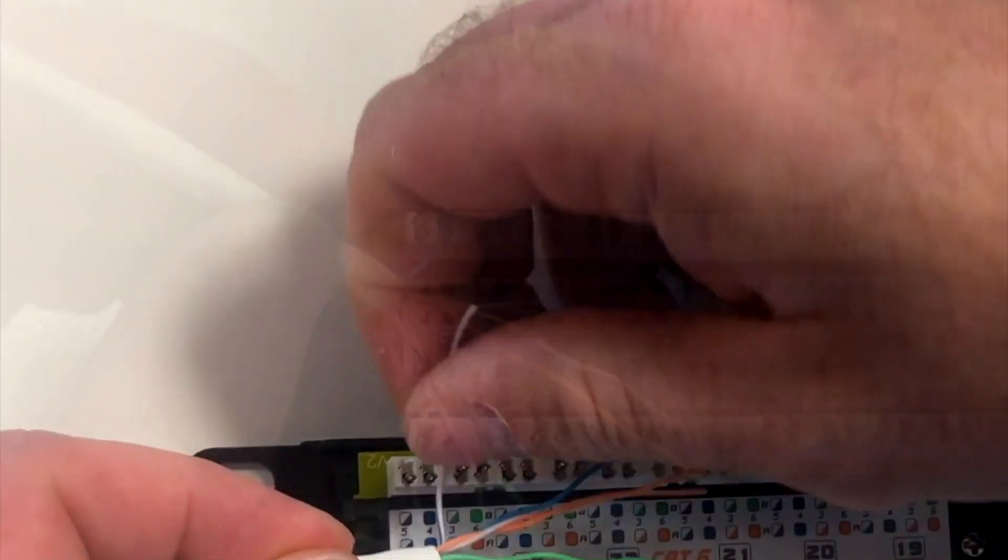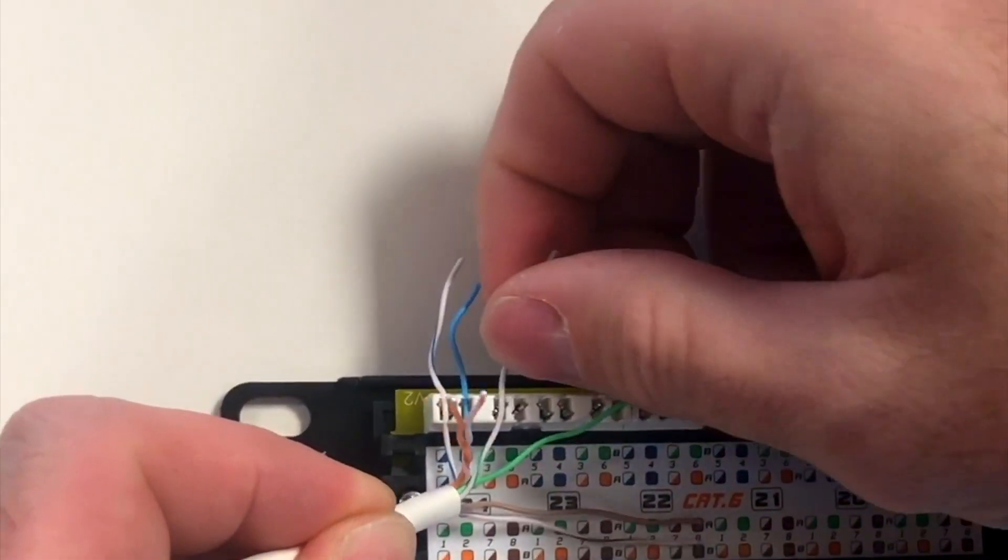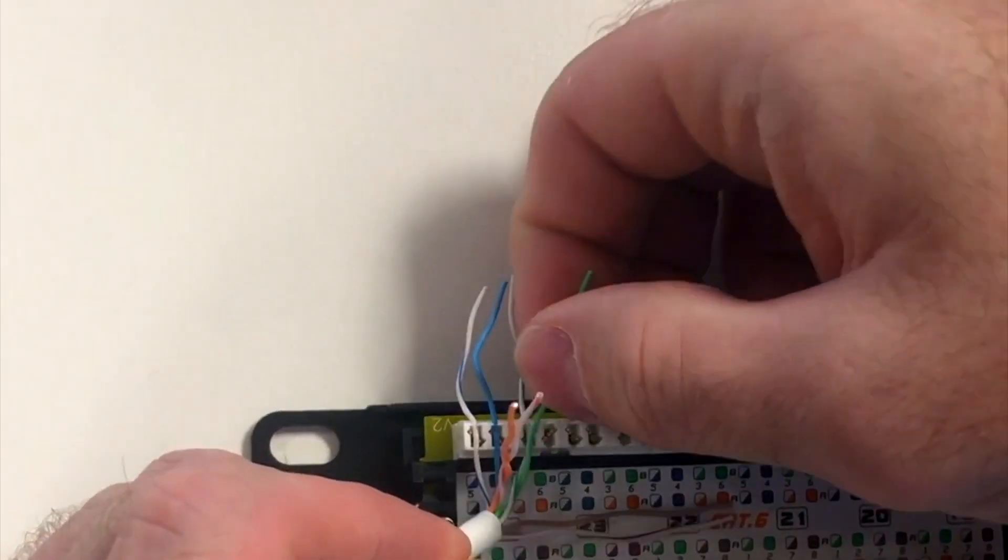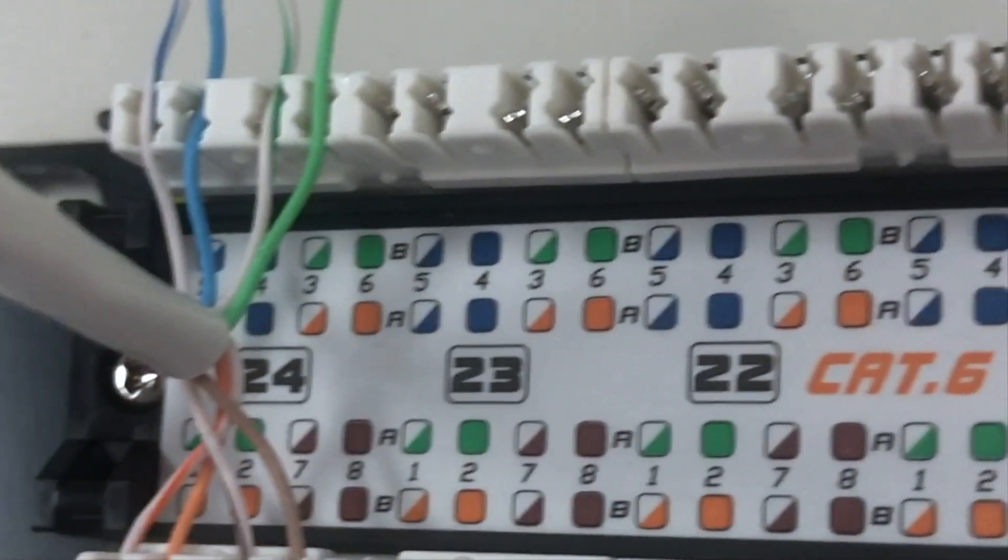To prep for the punch-down, align the cable in the middle. Then place the individual strands into the matching colored pins, following the color code: blue to blue, striped blue to striped blue, and so on.